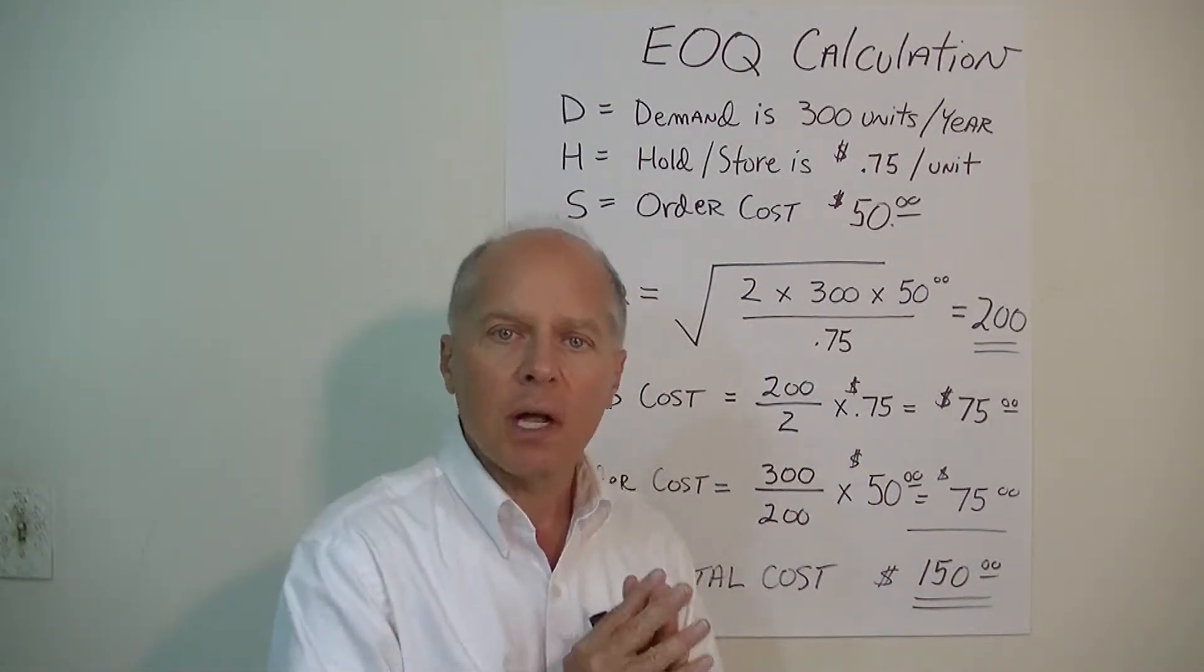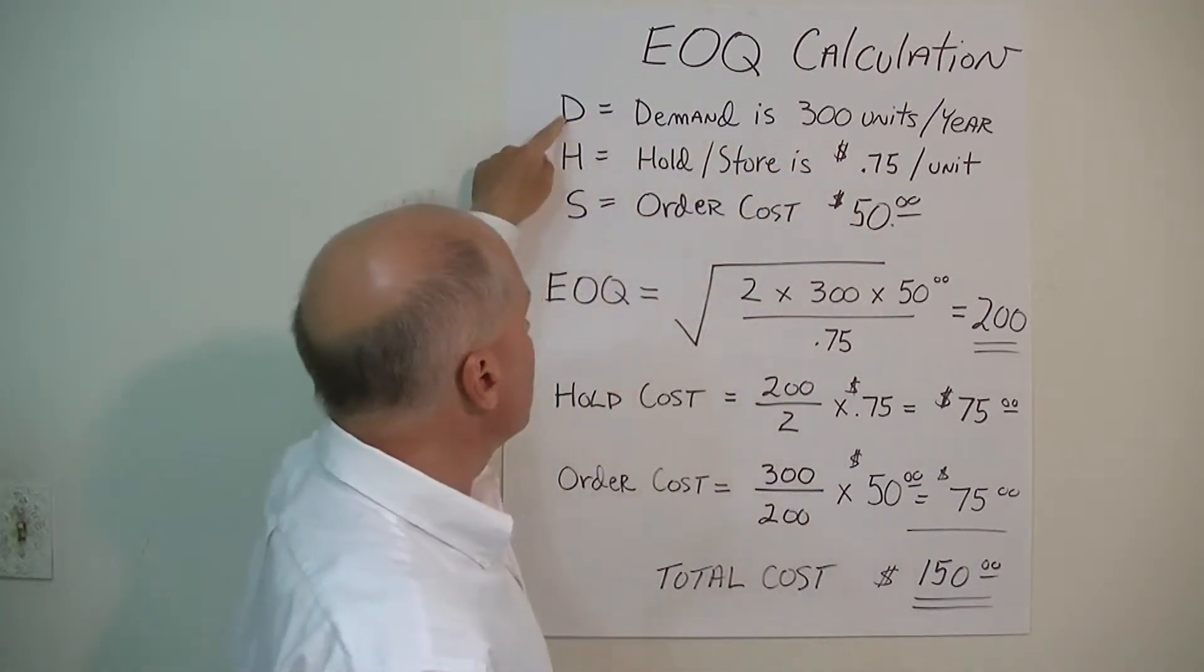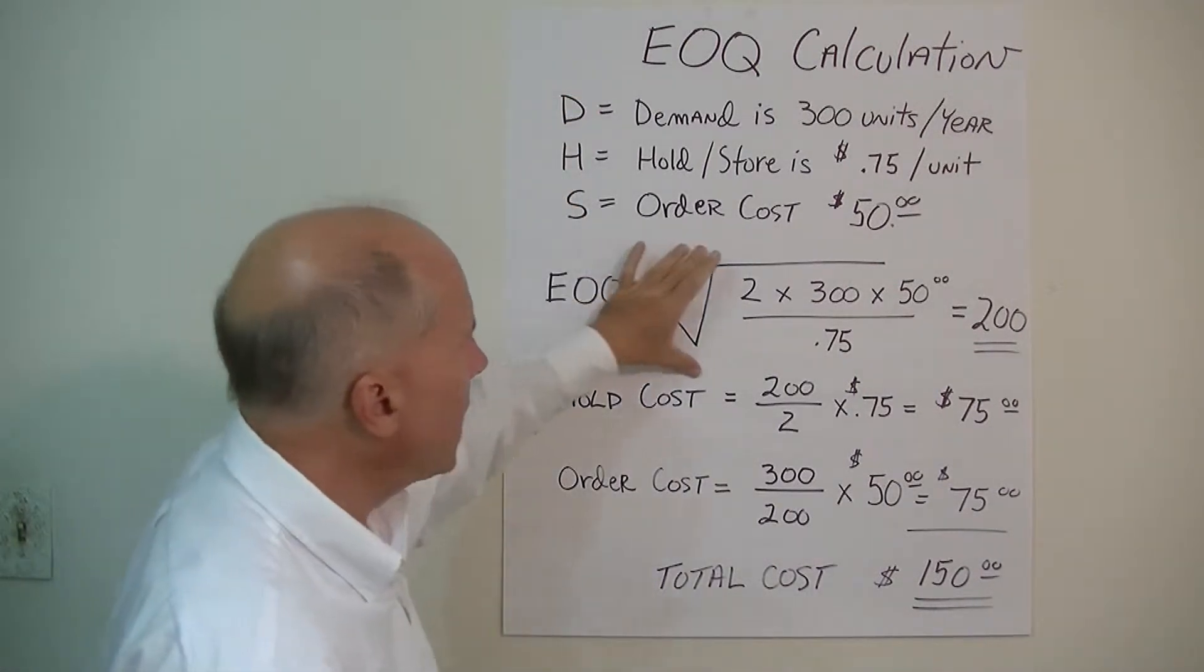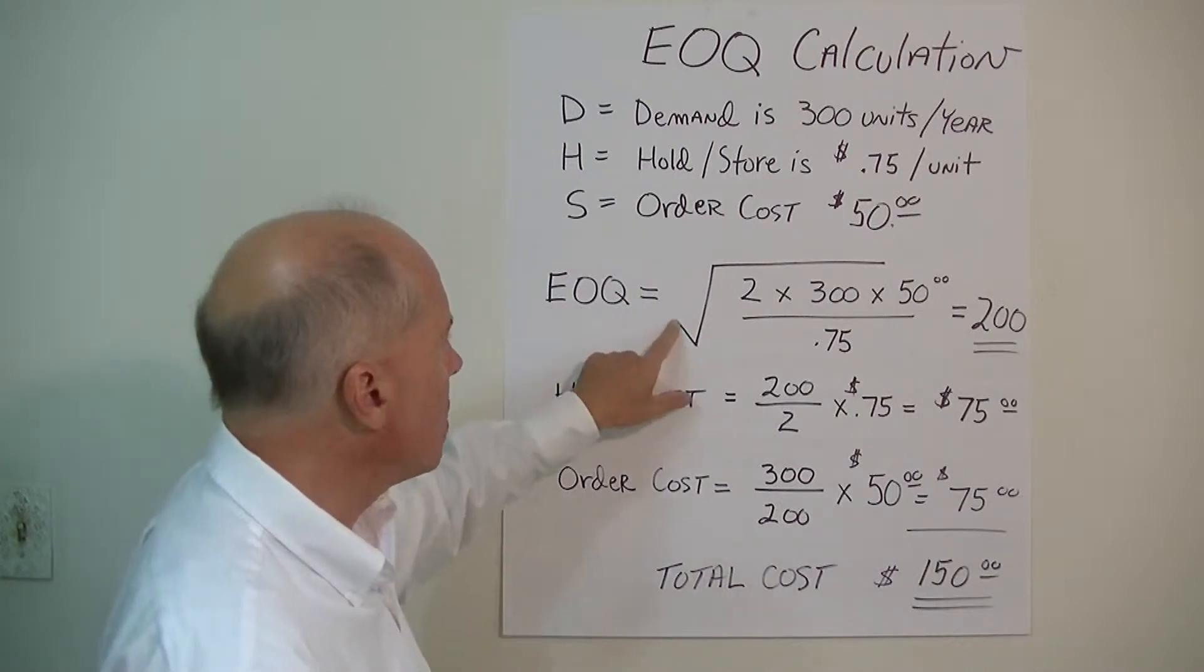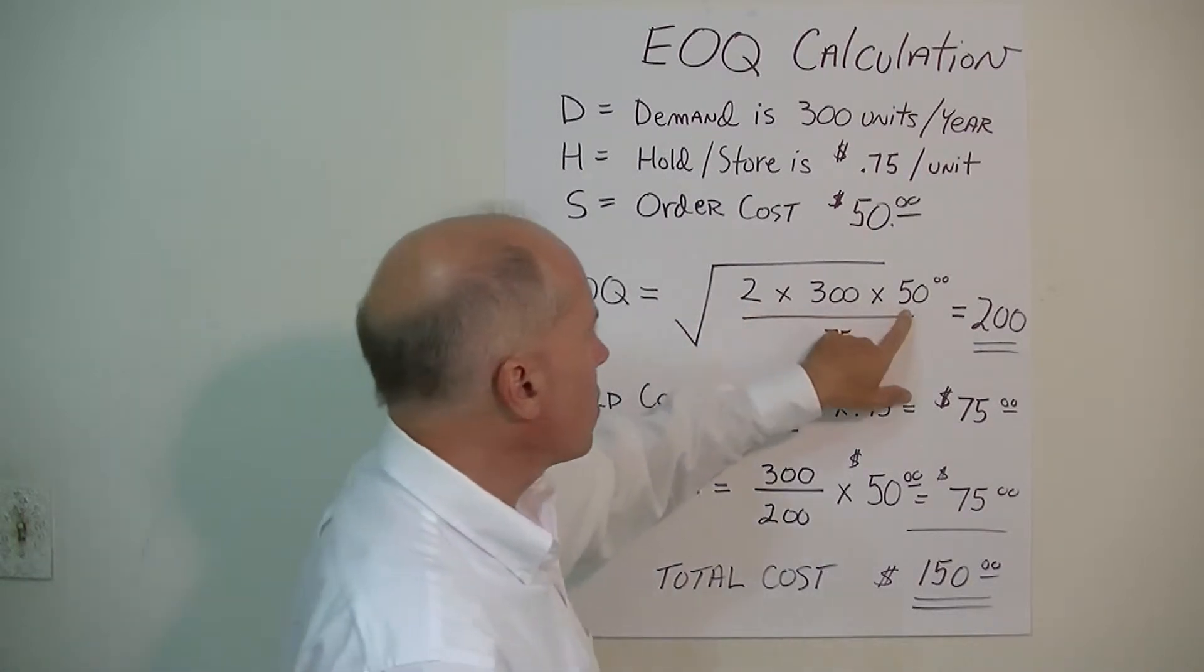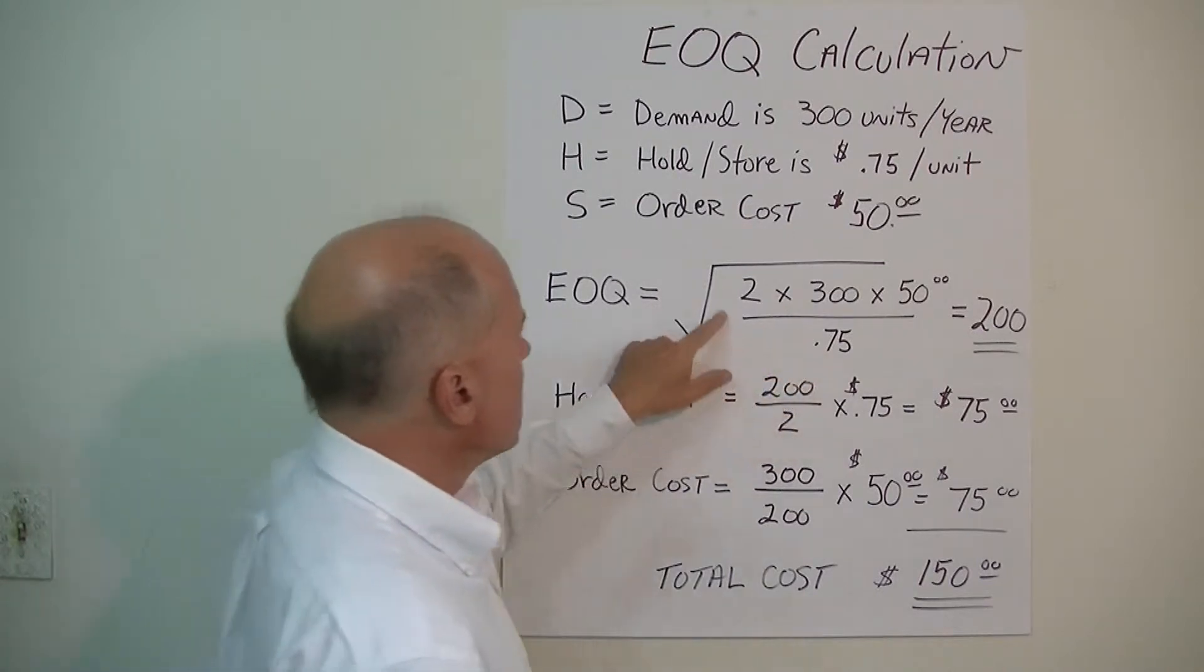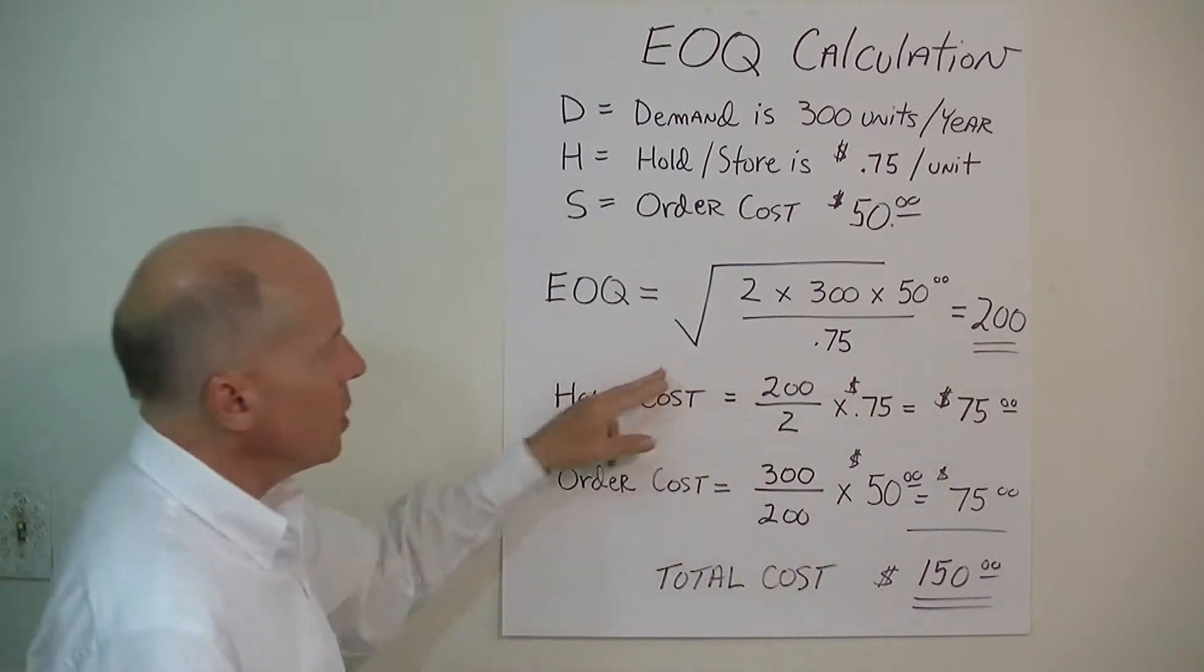Once we know these three variables—demand, holding cost, and order cost—we can plug that into the EOQ Economic Order Quantity Model: the square root of two times the demand times the order cost divided by the hold cost. If you work out this calculation, it comes up to 200.